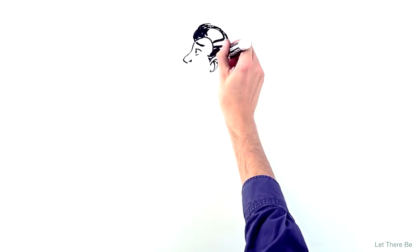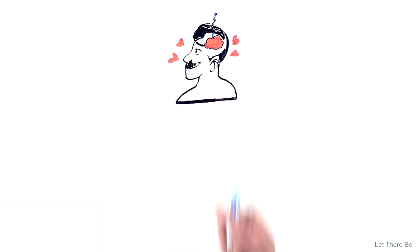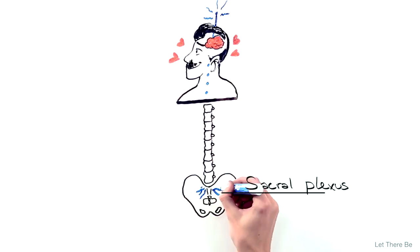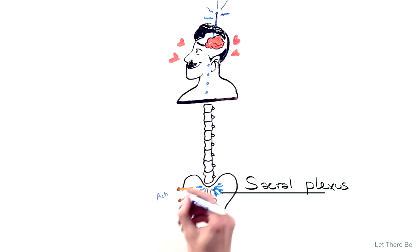The erection process begins when the brain processes various types of stimuli that are sent down the spinal cord to the sacral plexus, which communicates with penile parasympathetic nerves to release acetylcholine.